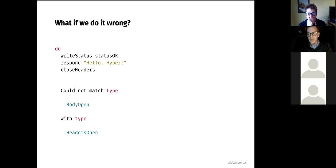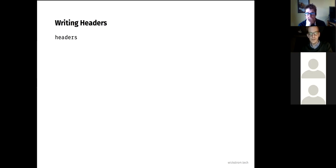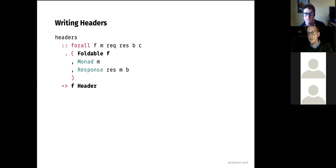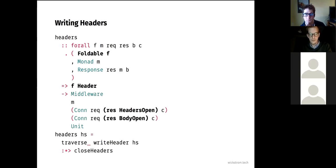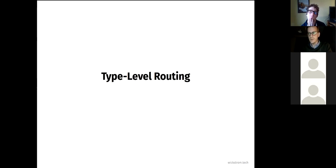One small abstraction we can build is a function called headers. It takes a foldable of headers and returns a middleware transitioning from 'headers-open' to 'body-open', writing all those headers. The implementation is very simple: just traverse with write-header, then close. That's really the hyper API that it tries to solve, and then we have things built on top of it.